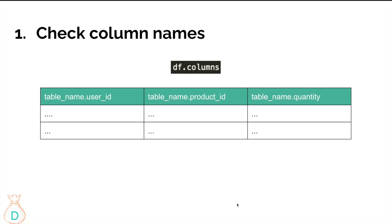Whenever I prepare my data, I always run my query and then create a dataframe based on the queries I wrote. Then I have to check the columns to make sure that all the columns I selected in my SELECT statement are included in my dataframe, and also to be aware of what my column names are when I try to manipulate my data. So the first thing I do is df.columns to check what my column names are.